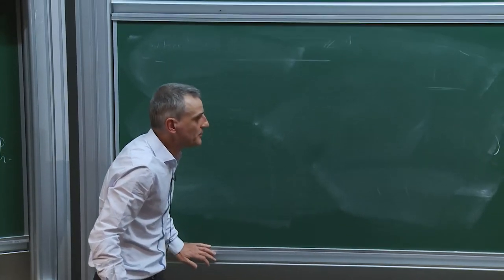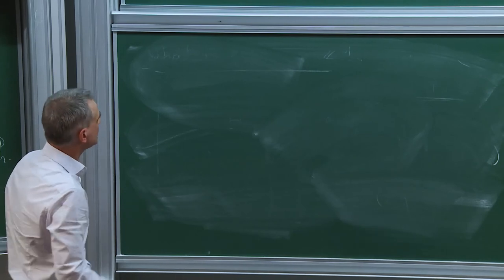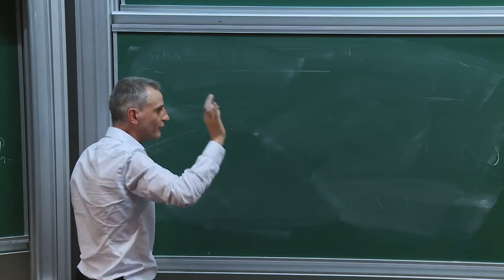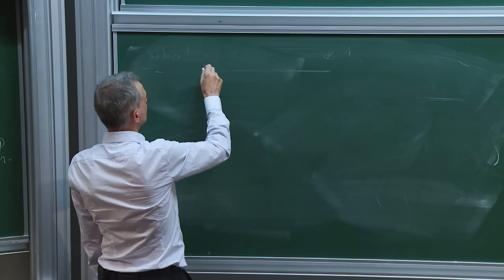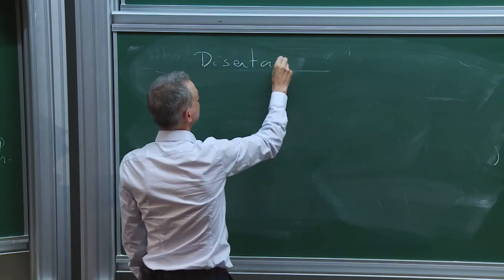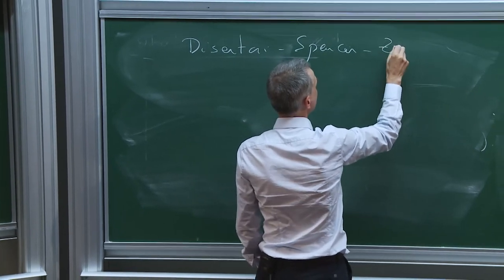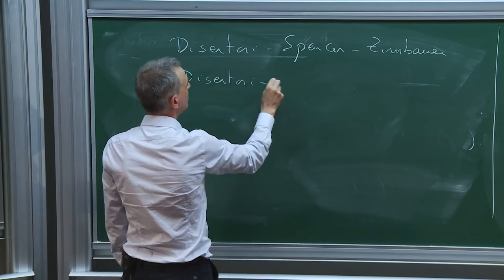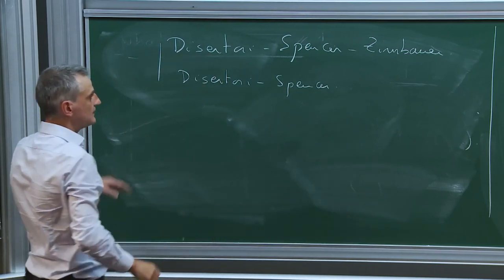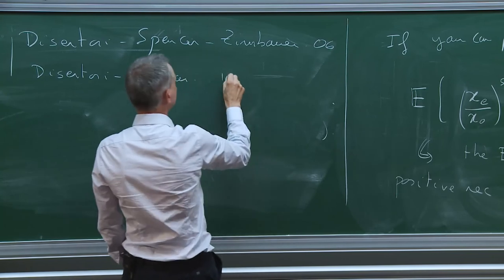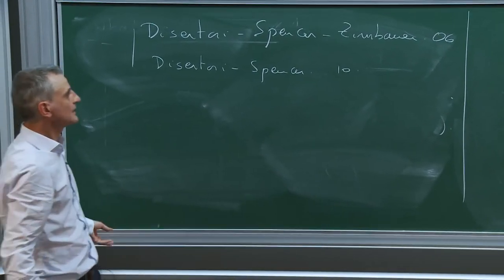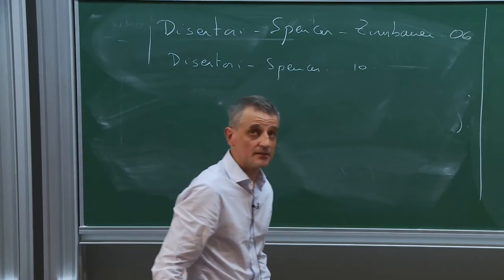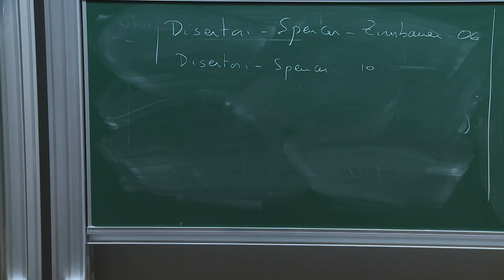There have been important recent progress in the last five years, with many people involved. Key contributions came from mathematical physicists Disertori, Spencer, and Zirnbauer about the sigma field around 2006-2010. These were absolutely not related to the ERRW at the time, but turned out to be key steps. Let me now state what we know on Z^d.